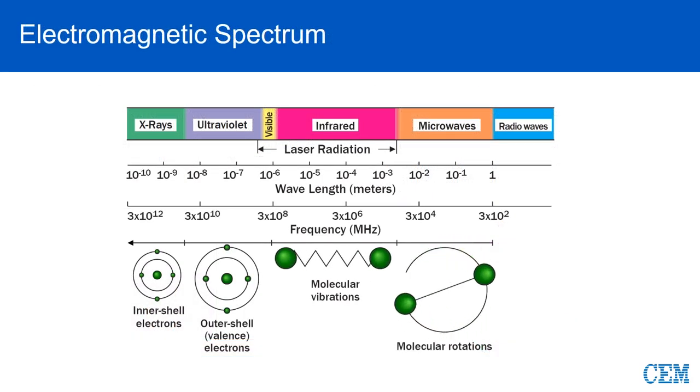To further understand how microwaves heat materials, let's look at the electromagnetic spectrum and specifically where microwaves are located on it. You will notice that microwaves are located in the low energy spectrum area to the right between IR and radio waves. It is a region that provides for molecular rotation interaction.